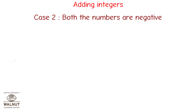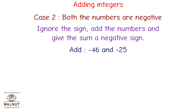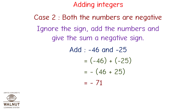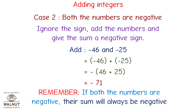Case 2: both the numbers are negative — ignore the sign, add the numbers, and give the sum a negative sign. Minus 46 and minus 25: we add 46 plus 25 to get 71, so the answer is minus 71. Remember, if both the numbers are negative, their sum will always be negative.